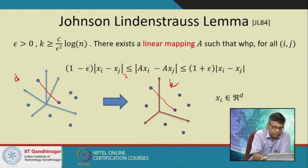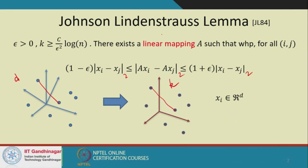When we talk about distances we are always talking about L2 distances here. Johnson-Lindenstrauss says there exists a linear mapping such that the target dimension is c/ε² · log n, and this mapping is created by filling the matrix with independent Gaussian random variables. We guarantee that with very high probability, for every pair i,j, the distance ‖Ax_i − Ax_j‖ is within a 1 ± ε factor of ‖x_i − x_j‖.